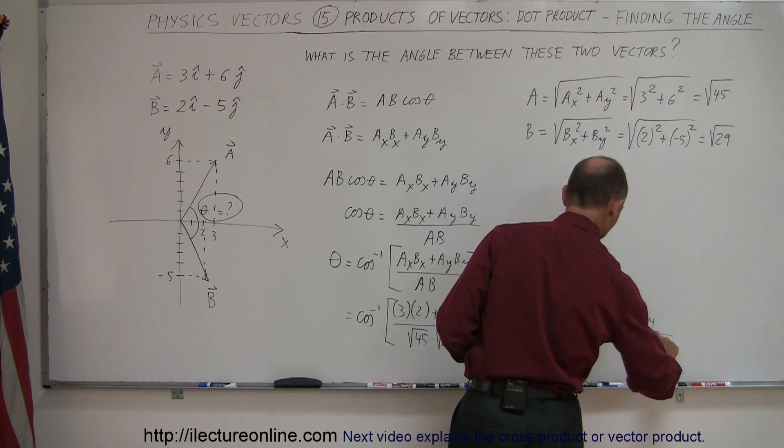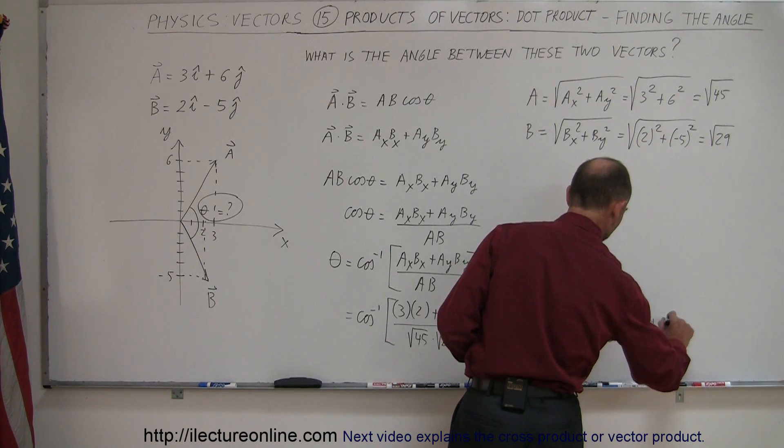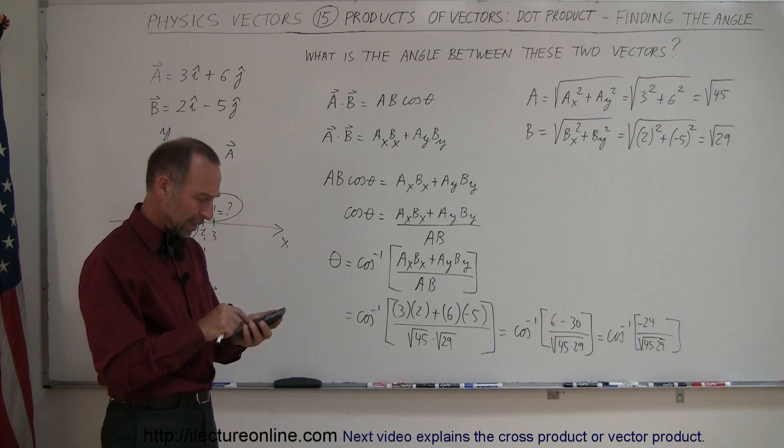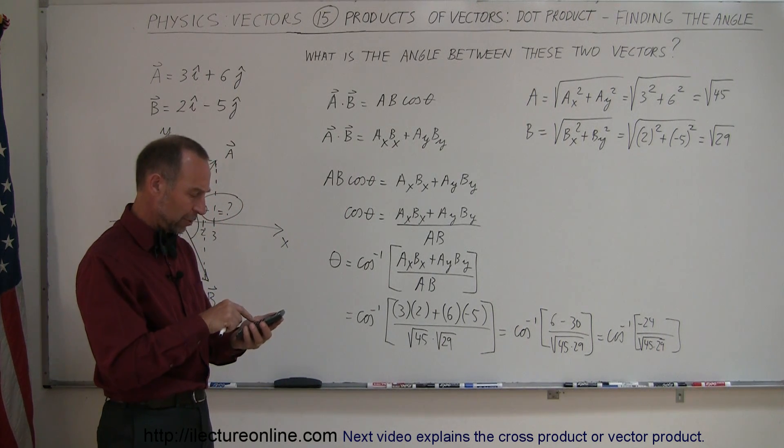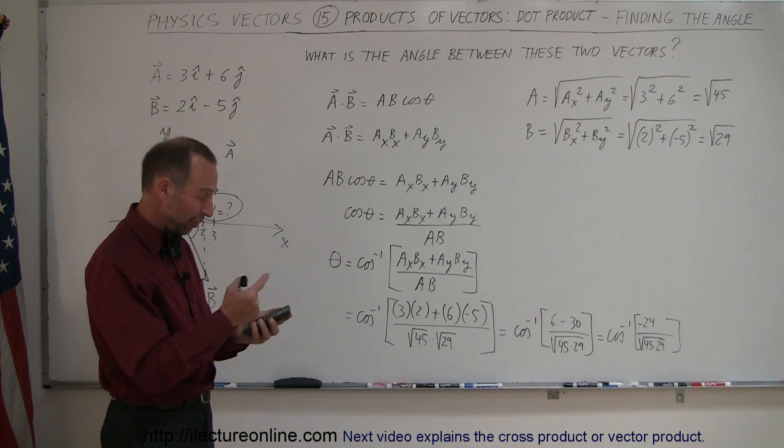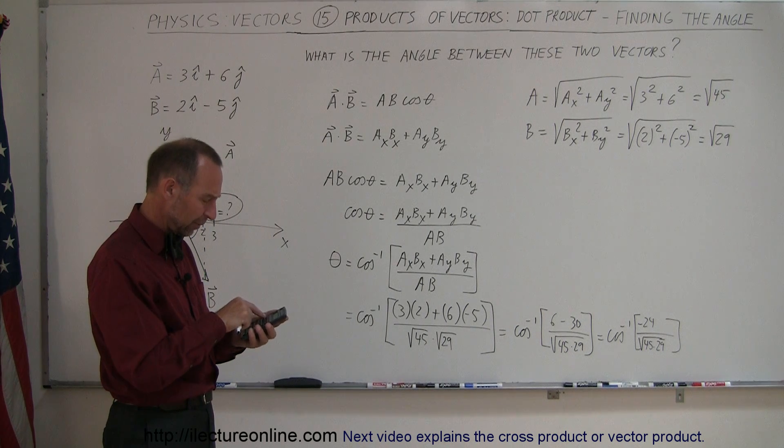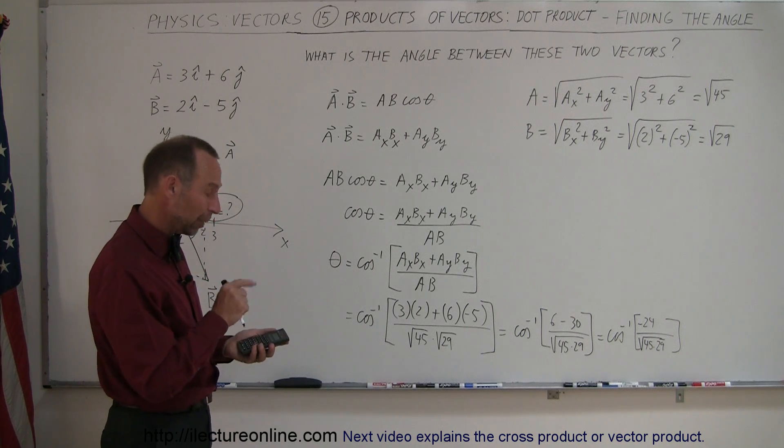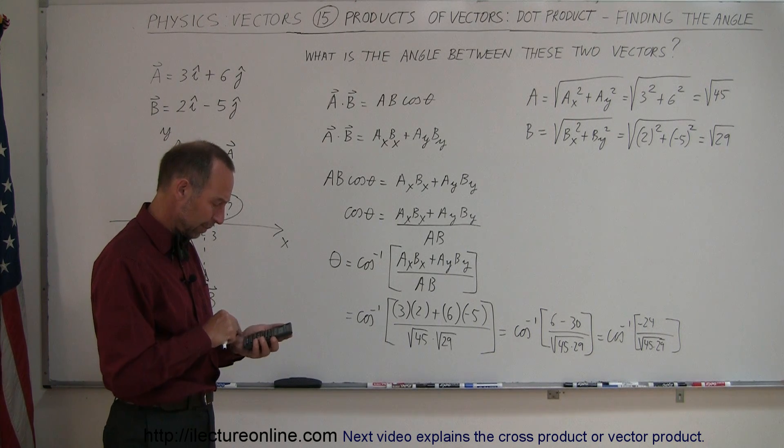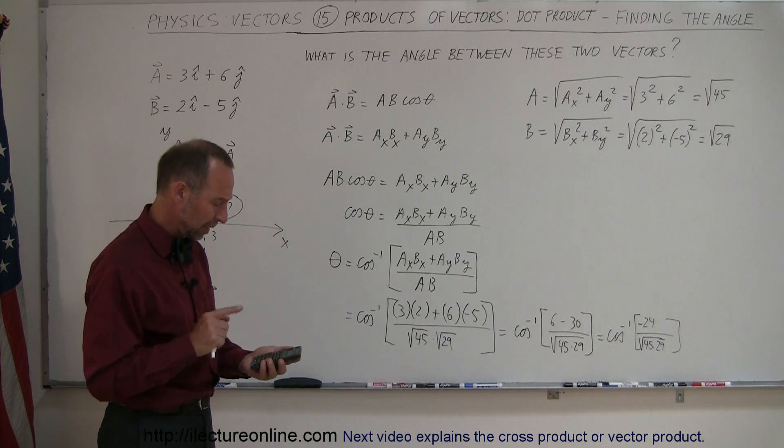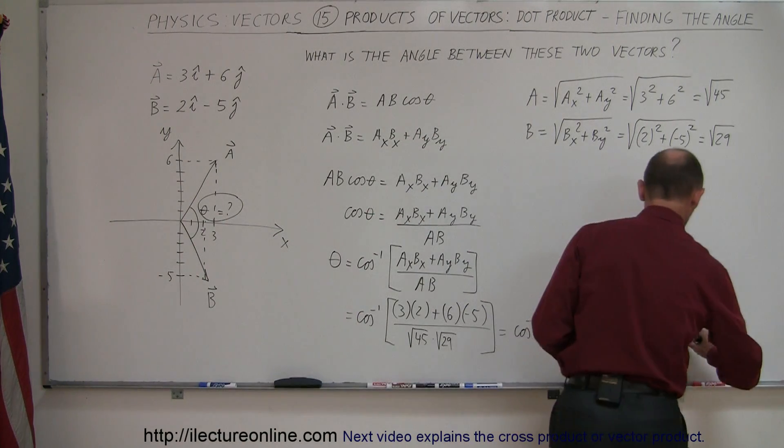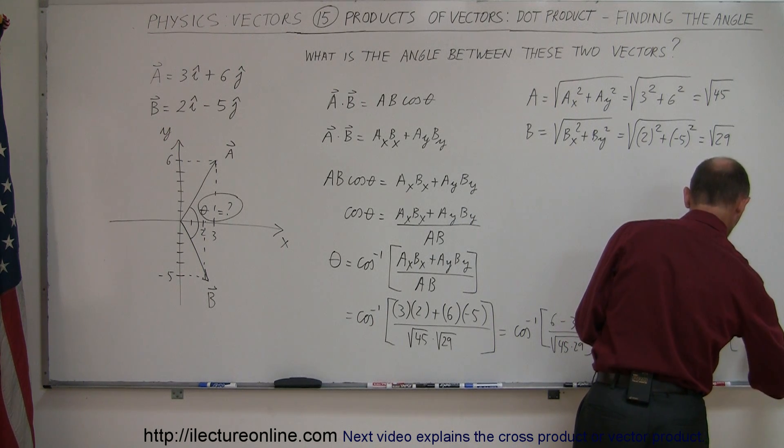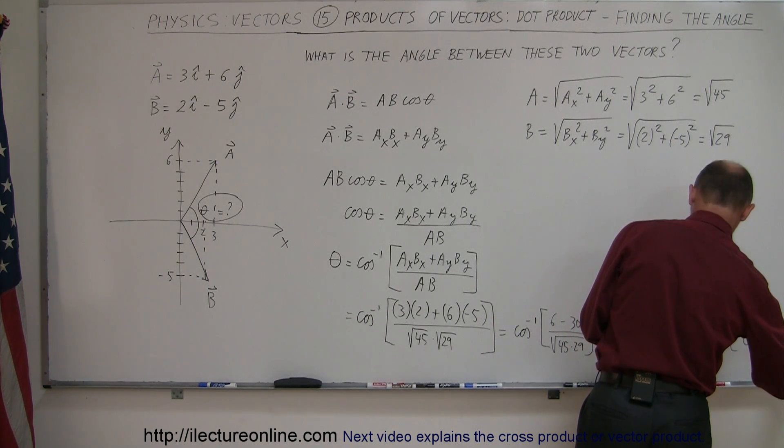Alright, so we get 45 times 29, take the square root, take the inverse because that's the denominator. So second function 1 over X, there we go. And then multiply it times the negative 24. Equals, and I get, this is equal to the arc cosine of negative 0.664.